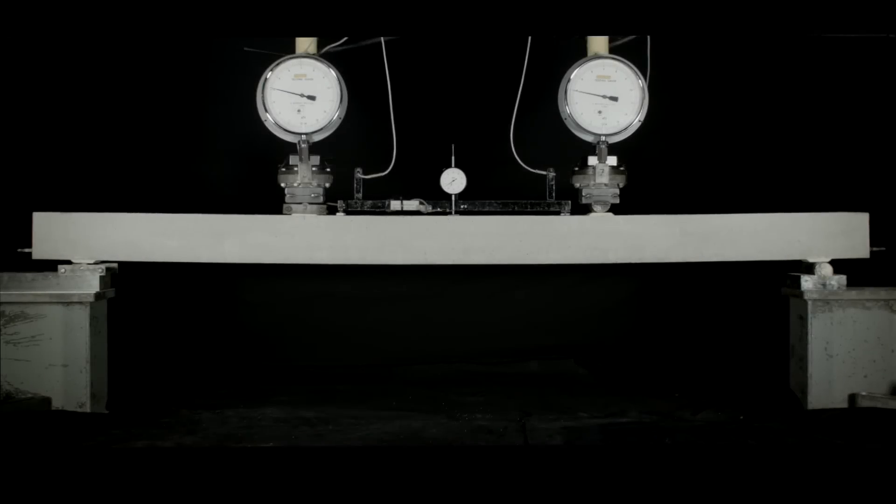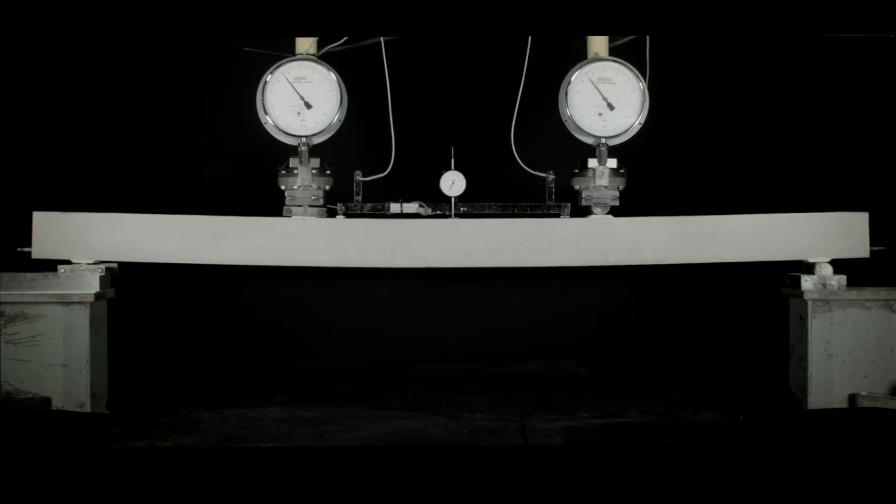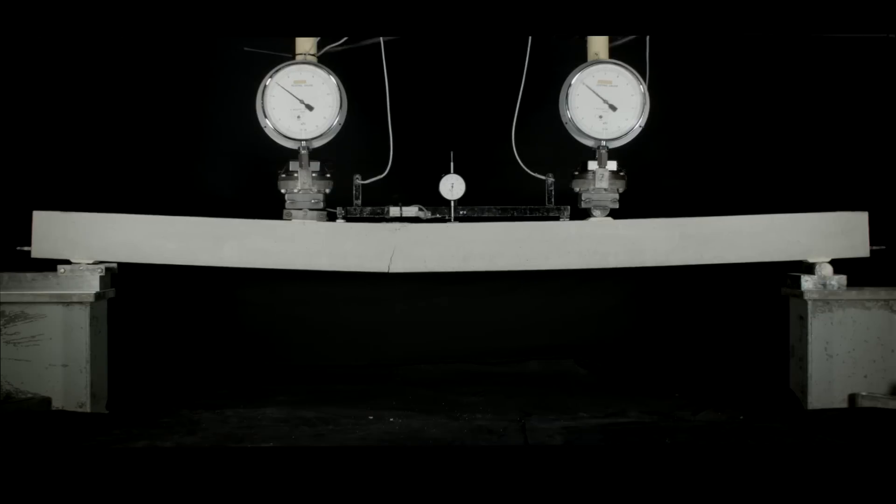The testing rig is now starting to apply vertical loads to the specimen and we can see that it is deflecting and starting to crack. This means that the steel in the beam is taking up the tension that is developing in the lower half of the section.